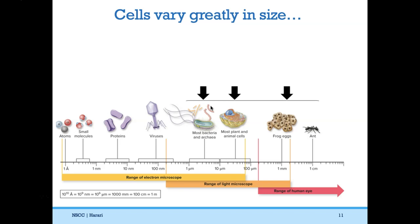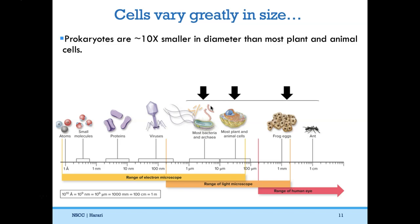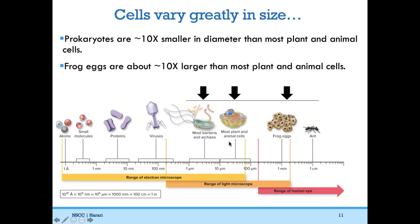Cells vary greatly in size. Prokaryotes like bacteria and archaea are about 10 times smaller in diameter than most plant and animal cells. Most plant and animal cells are in the range of 10 to 100 micrometers in diameter — more precisely, 10 to 30 micrometers for the average animal cell. Bacteria and archaea are about 1 to 10 micrometers in diameter. Some cells can be really large, like a frog egg at about one millimeter.